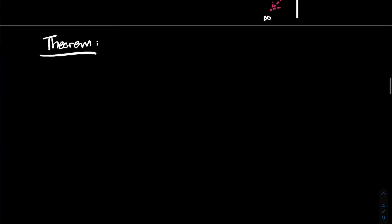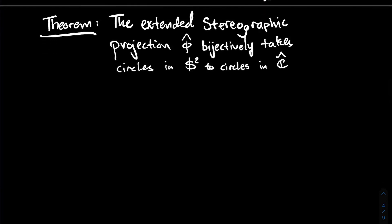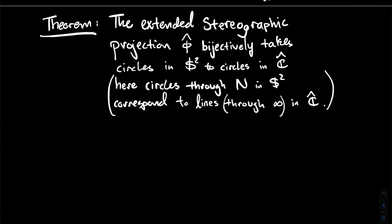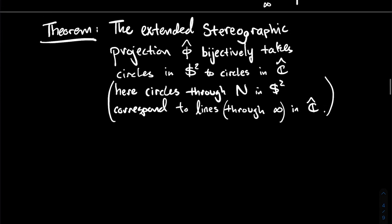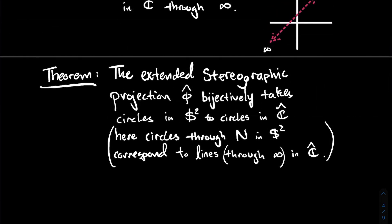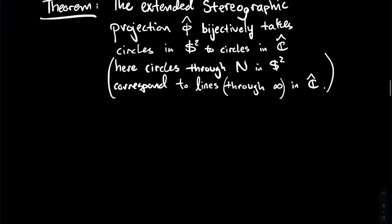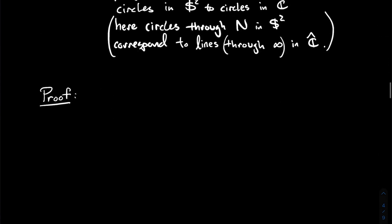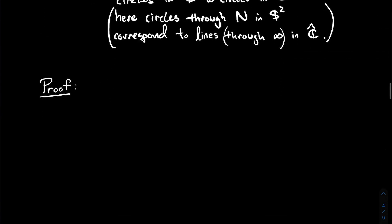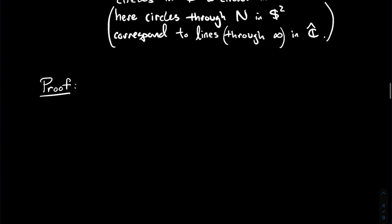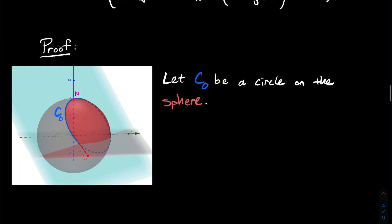Here is the big theorem: the extended stereographic projection φ̂ bijectively takes circles on the sphere to circles in the extended complex plane. Circles through the north pole on the sphere correspond to lines — circles through infinity — in the extended complex plane. We're going to prove this theorem, following Gamelin's book closely.